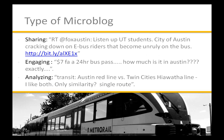SNAP coded the 8,300 microblogs from the public by type, theme, topic, and sentiment. A typology was created with three types: sharing, engaging, and analyzing. A sharing example: 'Listen up UT students, City of Austin is cracking down on e-bus riders that become unruly.' An engaging example: 'A $7 fare for a 24-hour bus pass — how much is it in Austin exactly?' An analyzing example: 'Transit: Austin Red Line versus Twin Cities Hiawatha. I like both. Only similarity: a single route.'